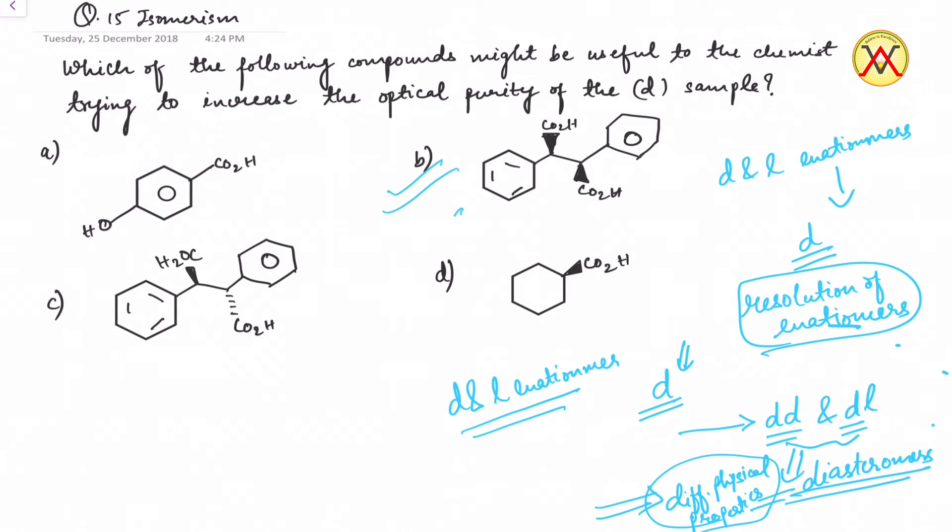Out of the given options, option B is optically active and we can use it to increase the purity of the sample. So B is our answer.